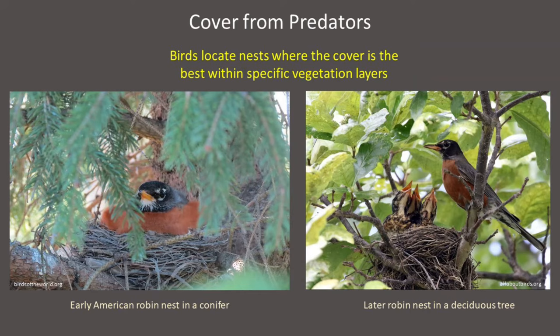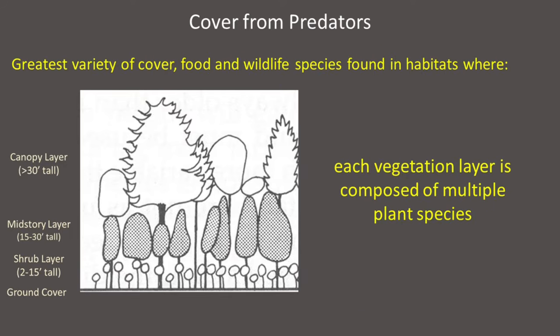Many birds use slightly different areas for nesting based on where the cover is best as the nesting season progresses. For example, birds that nest very early in spring, such as American robins and northern cardinals, often locate their first nests in the cover of dense conifers, and they don't nest in deciduous trees or shrubs until later in the season when these have finally leafed out. Habitats are usually most beneficial and support the greatest variety of wildlife species when each vegetation layer is composed of a variety of different plant species — including both conifers and deciduous plants.